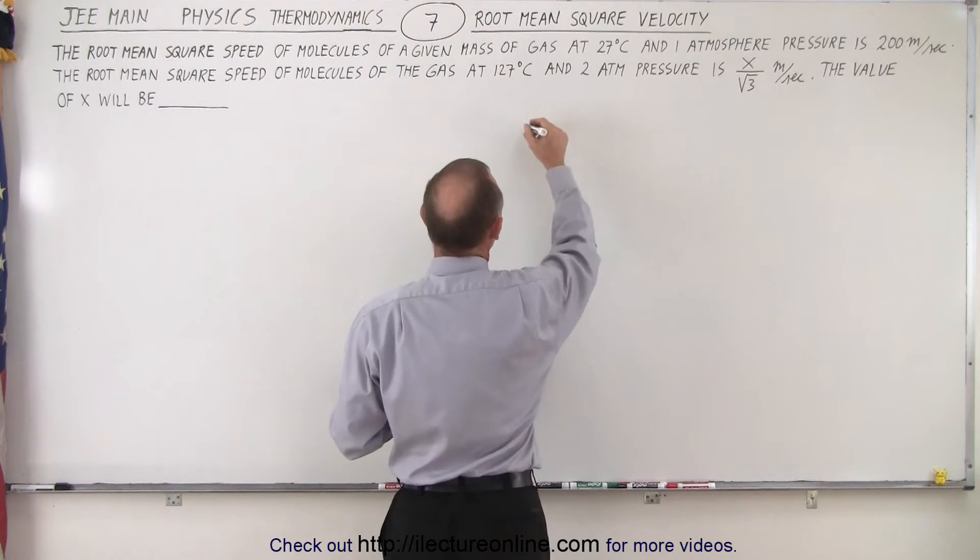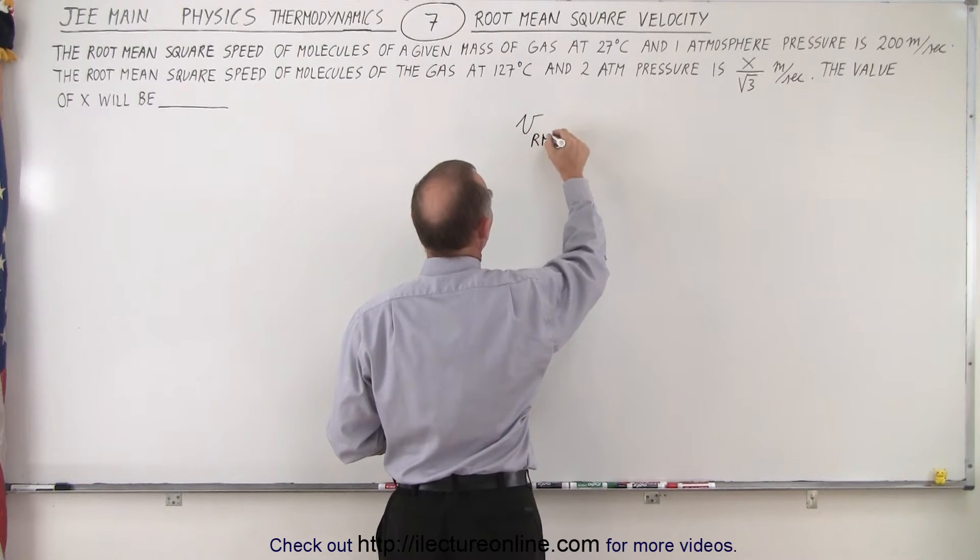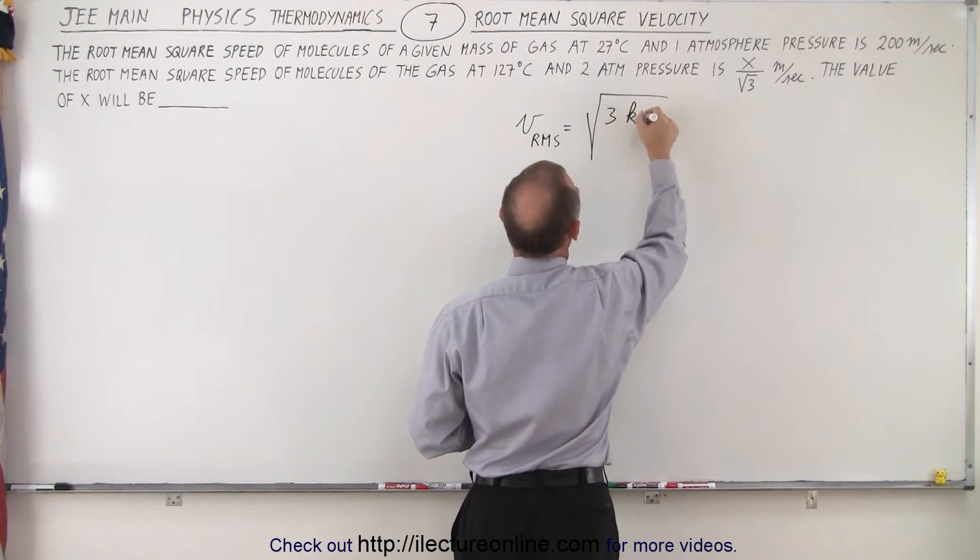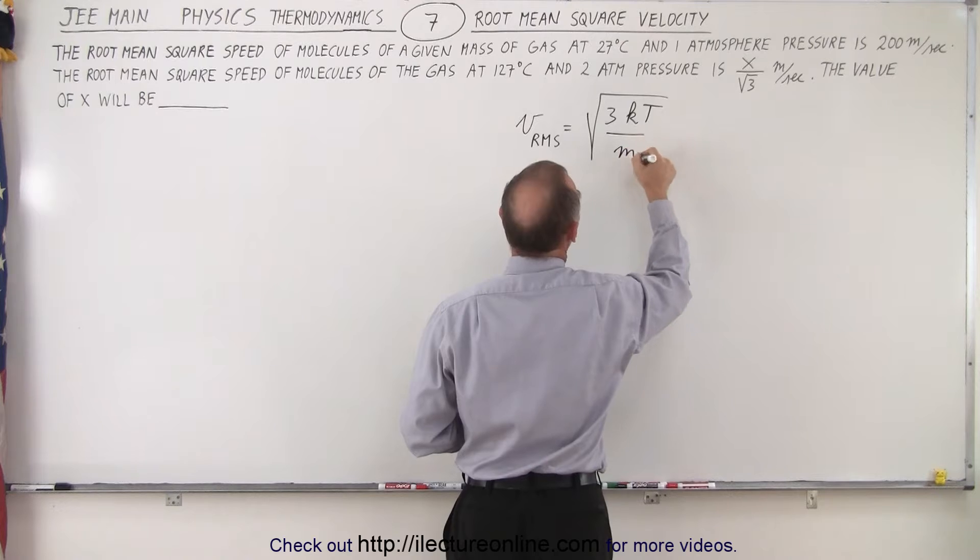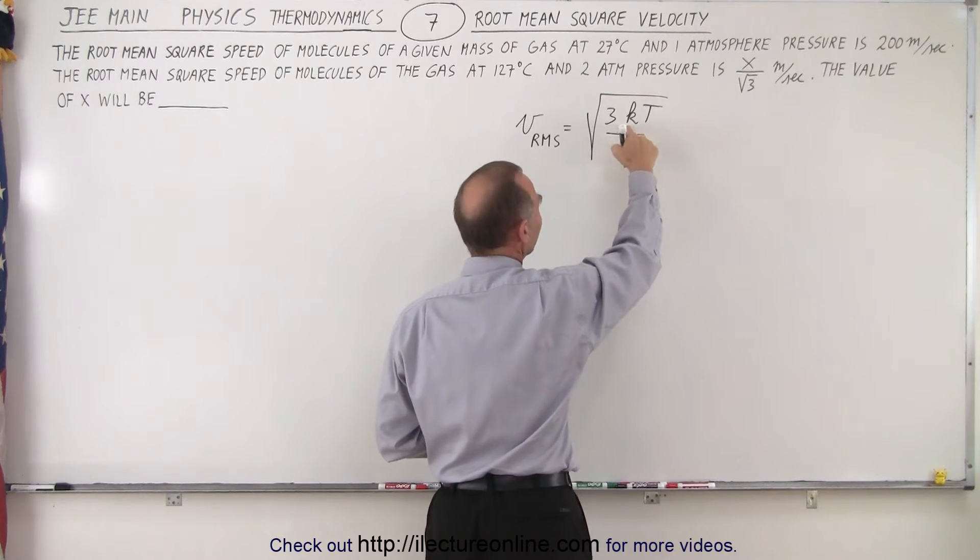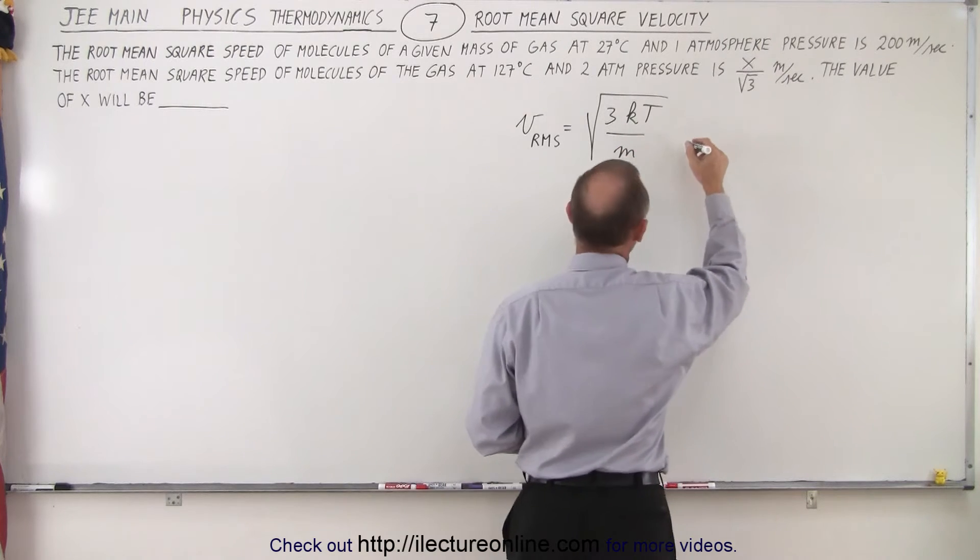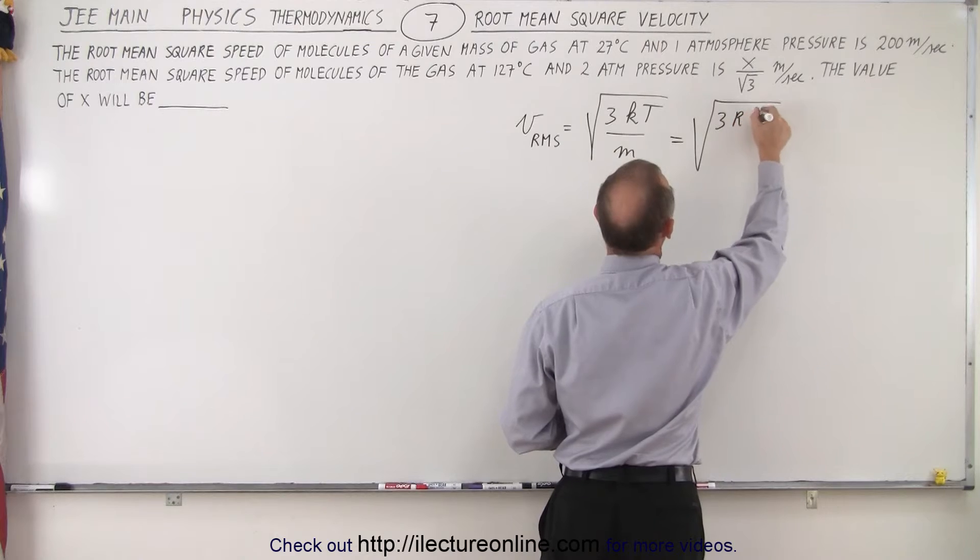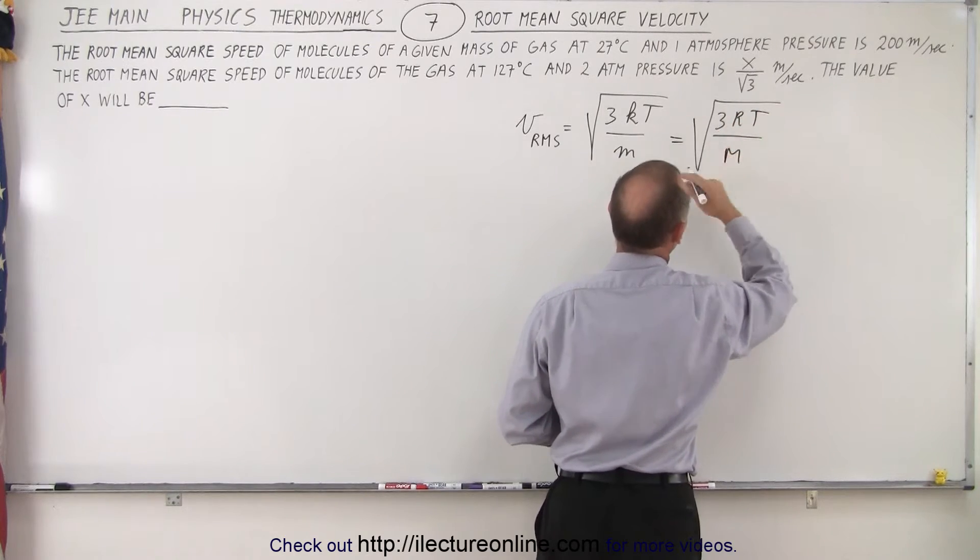The reason is that the RMS velocity, VRMS, is equal to the square root of 3KT over M. If you use M as the mass of a single molecule, and K is the gas constant divided by Avogadro's number, or it can also be written as the square root of 3RT over the molar mass.